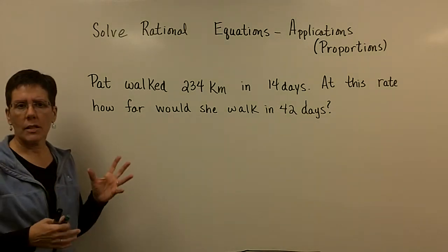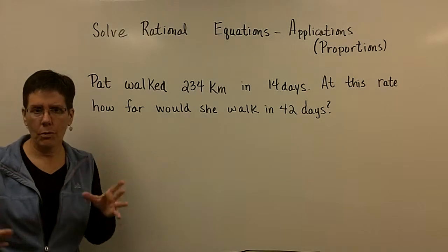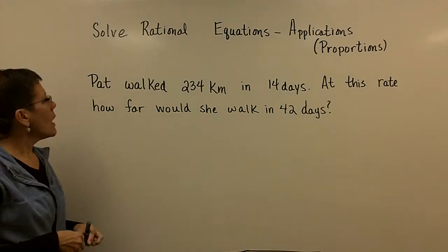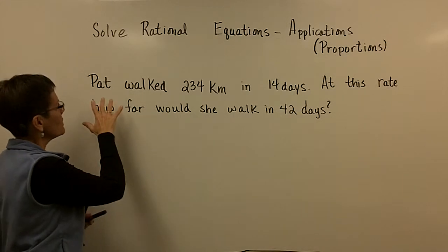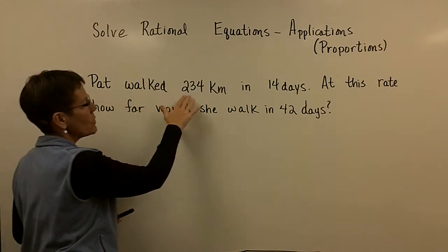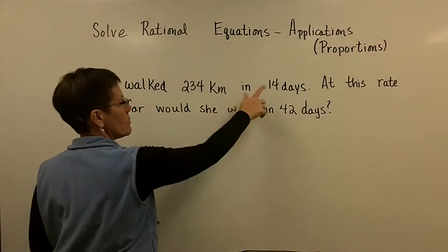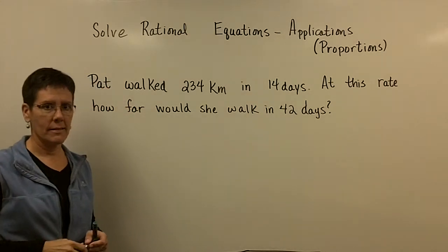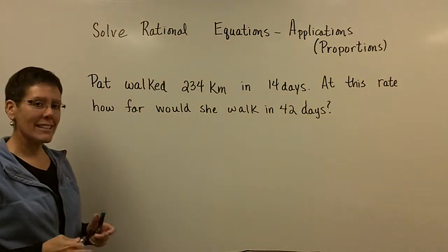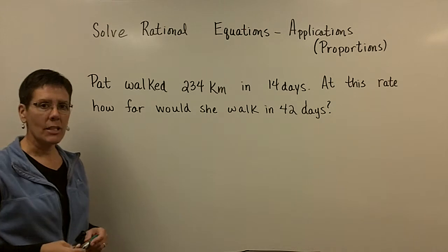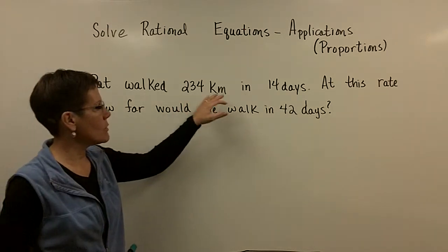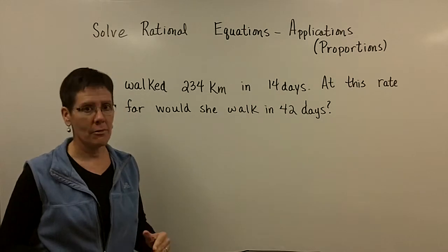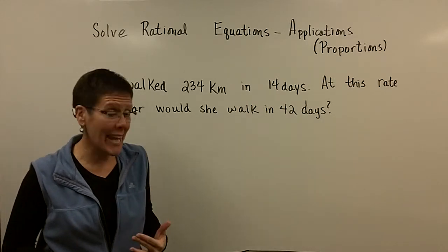So first of all, I'd like to take a look at this problem, then I'm going to throw out some situations at you. I like to walk, went hiking all summer last summer. Pat walked 234 kilometers in 14 days. At this rate, we kind of have given you a rate. You could calculate my number of kilometers per day. You could take 234 and divide it by 14 and find out my number of kilometers per day.